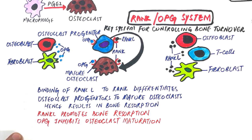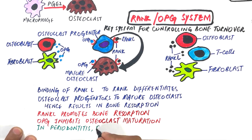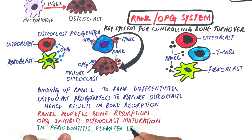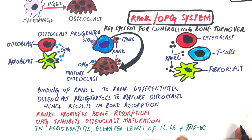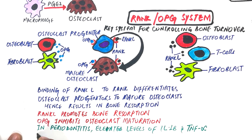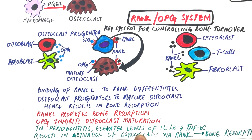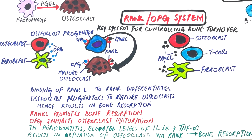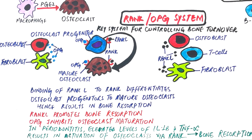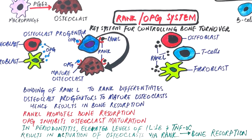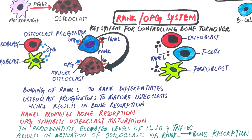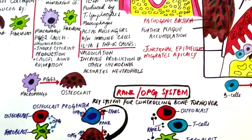In individuals with periodontitis, elevated levels of pro-inflammatory cytokines such as interleukin-1-beta and TNF-alpha, and increasing numbers of infiltrating T cells, result in the activation of osteoclasts via RANK, which results in alveolar bone loss. PGE2 also induces osteoblasts to secrete more RANK-L.